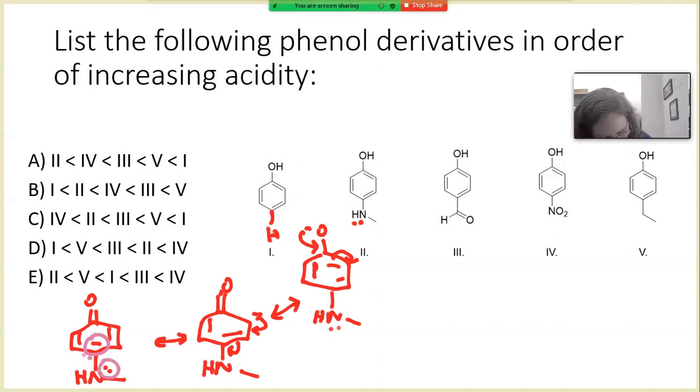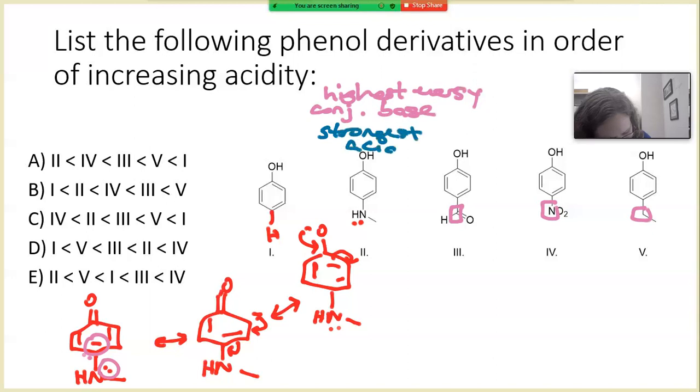So that means this is going to be higher in energy. So if we take a look at our other examples, none of them have a lone pair directly adjacent. We have carbon here, this nitrogen, and then this neutral carbon with no lone pairs. So this one is probably going to be our highest energy conjugate base. So that means it's not stable, and so this will be our strongest acid because we've destabilized the conjugate base.